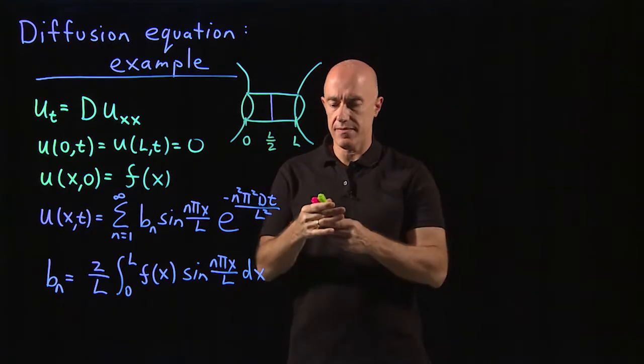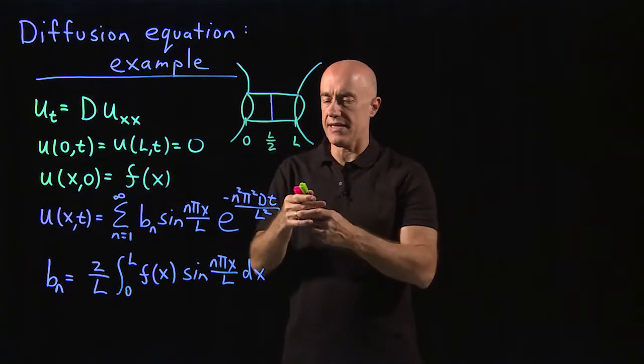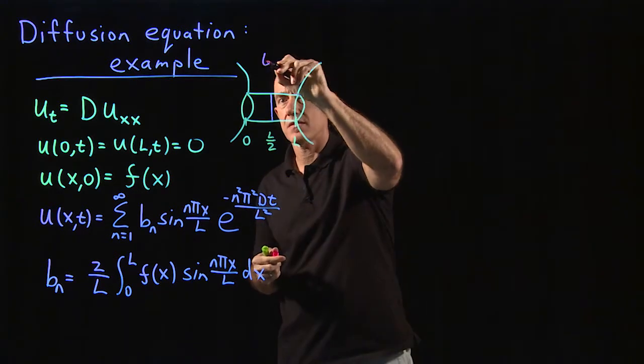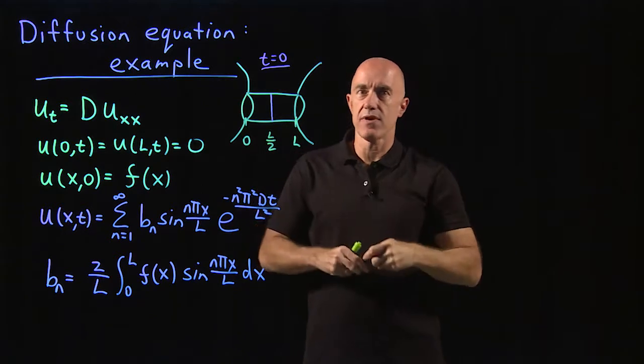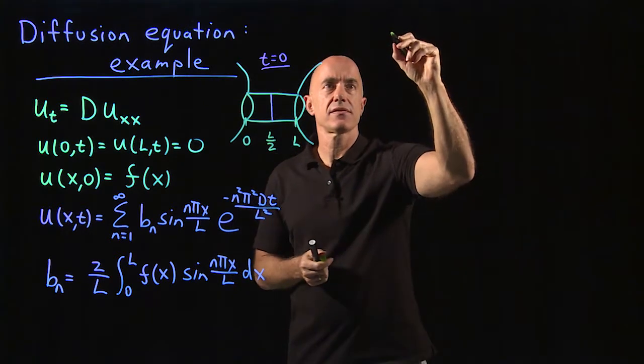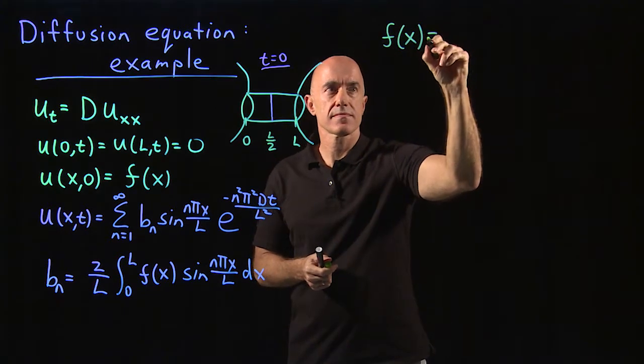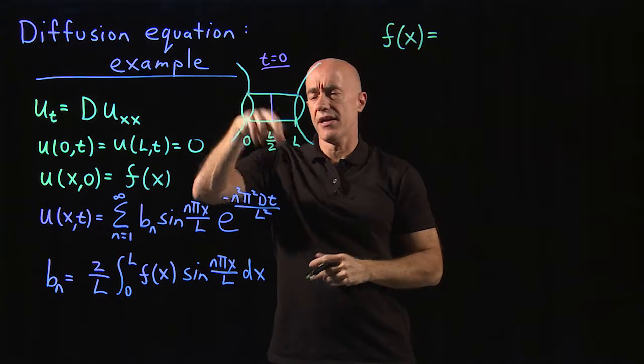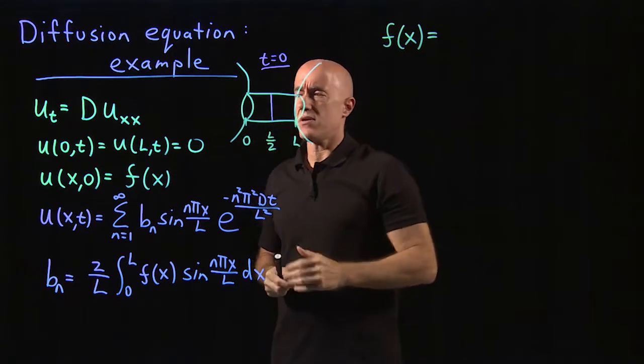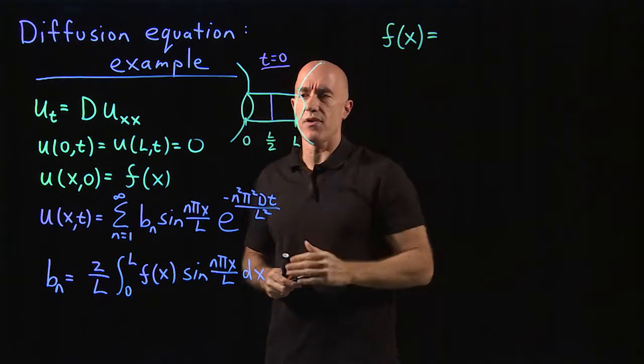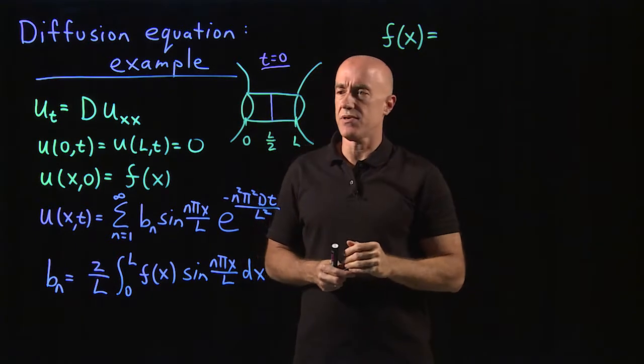How do we model that? Well, that's the initial, this is at t equals zero. This is our f of x. So we have to write down an f of x. What should it be? Well, this dye here is only in the middle. So u should be zero everywhere in this pipe except that position x equals L over two.